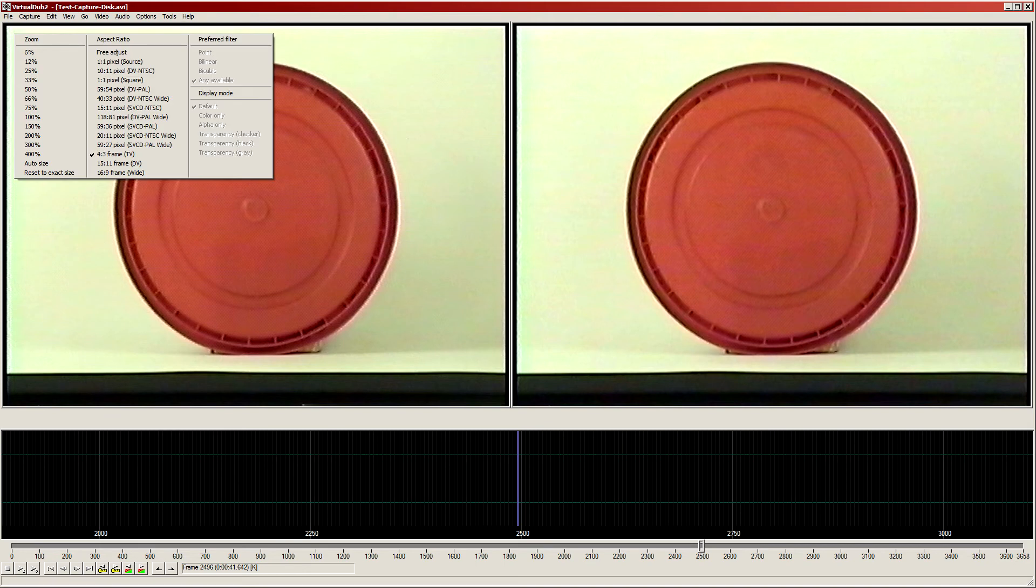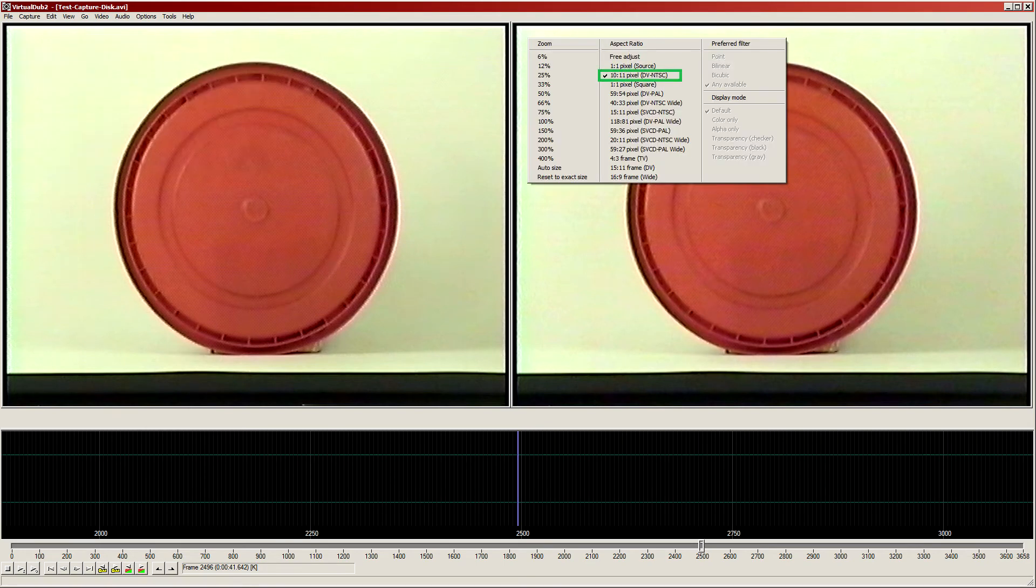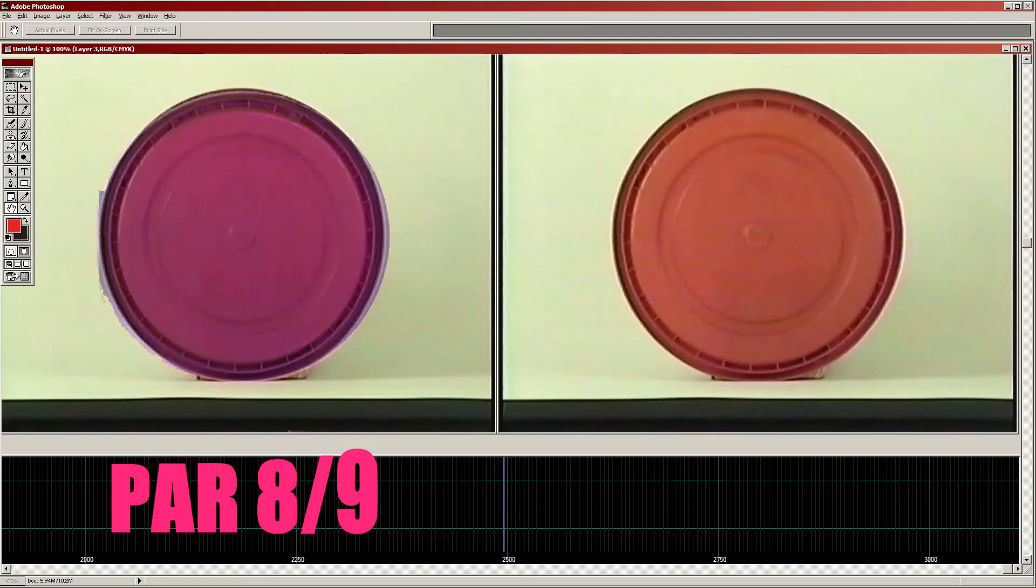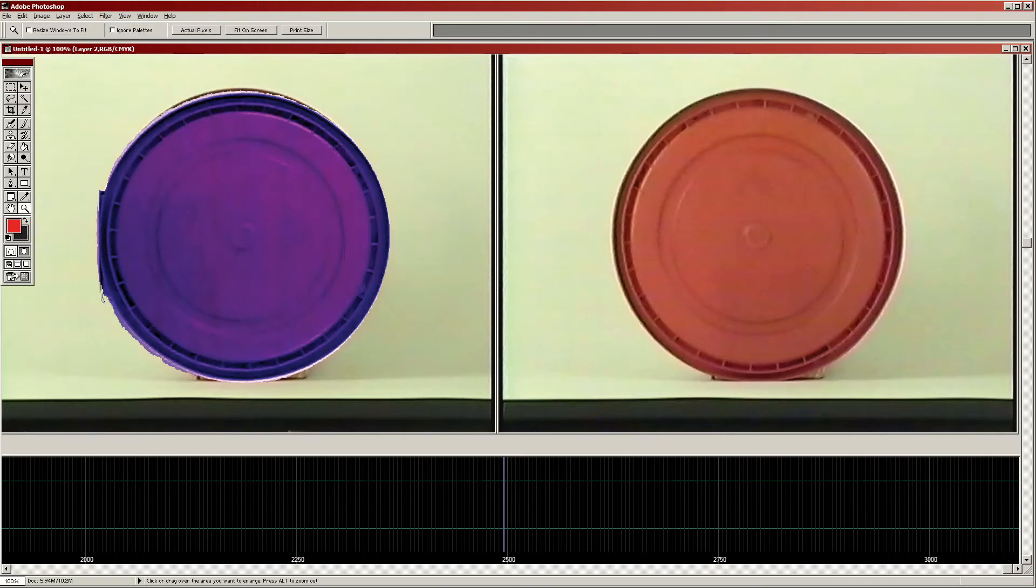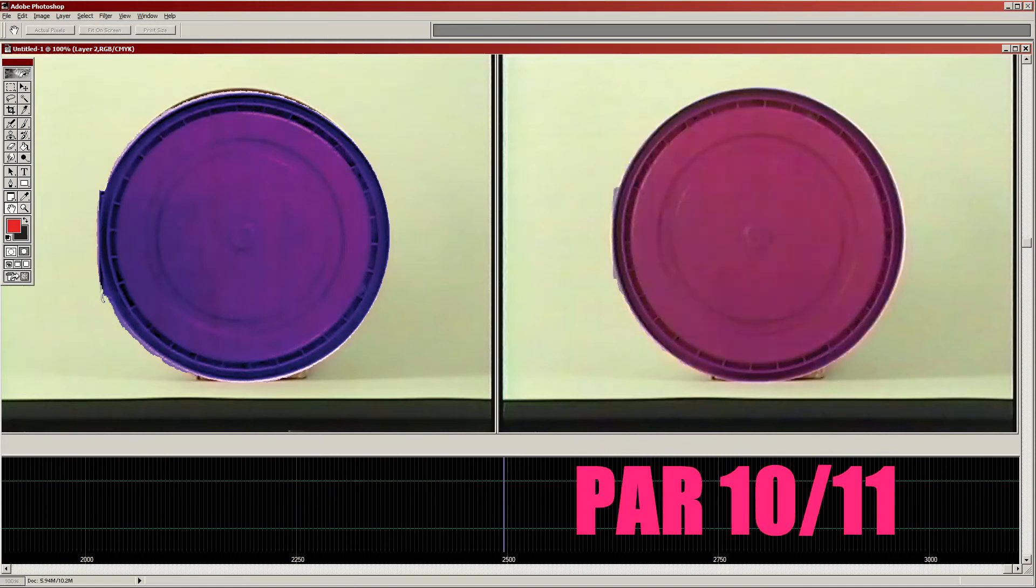If you have the camcorder that you use to shoot your videos, you can verify accuracy of the chosen pixel aspect ratio by shooting a square or a round item, making a screenshot, bringing it in a photo editing app, and rotating the item 90 degrees in a new layer. Which one looks more round to you?